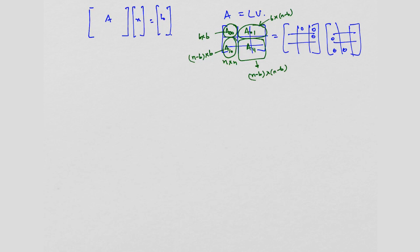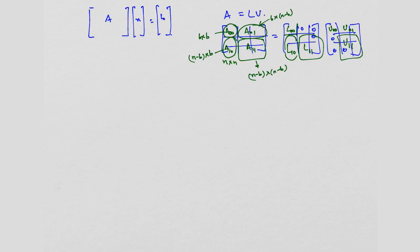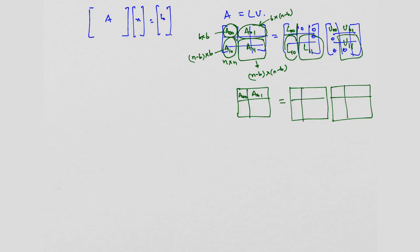I am just carving out a B-cross-B block at the corner. Similarly, I am going to break the L matrix into L00, and the zero block which I do not need to name. This part I am going to call L10 and this is L11. Similarly, this is U00, U01, and this part I am going to call U11. So let me just rewrite this: A00, A01, A10, A11 equals L00, L10, L11 with the zero block, times U00, U01, U11.